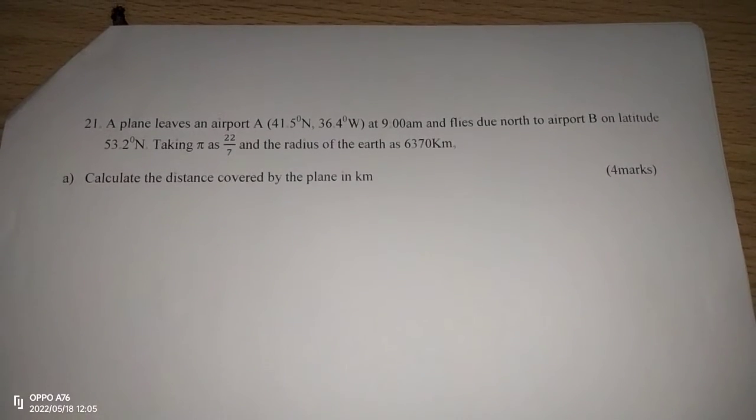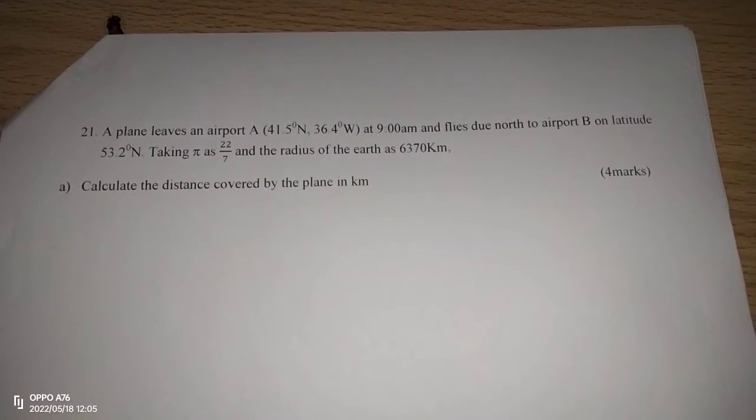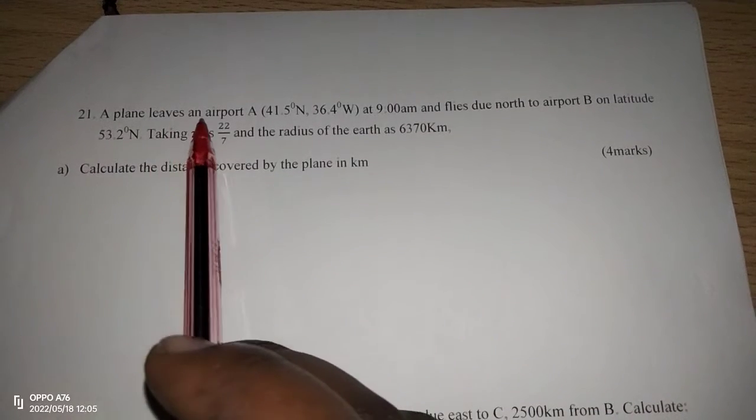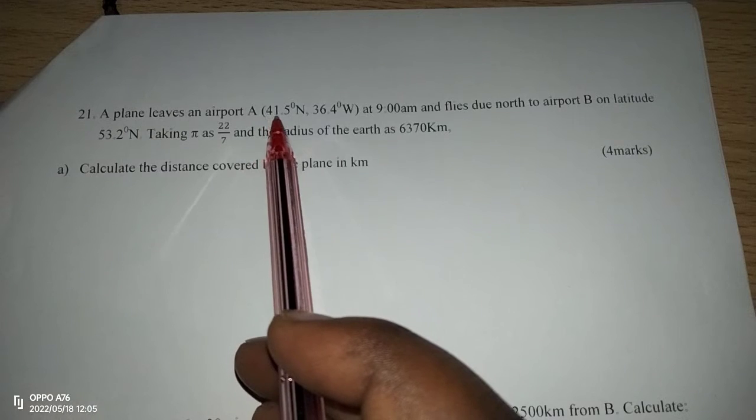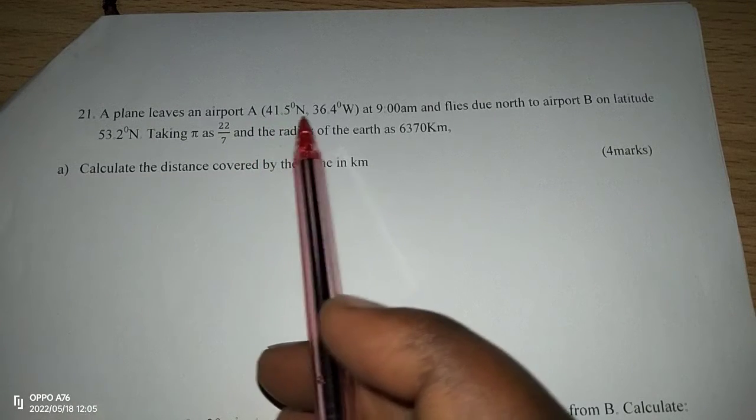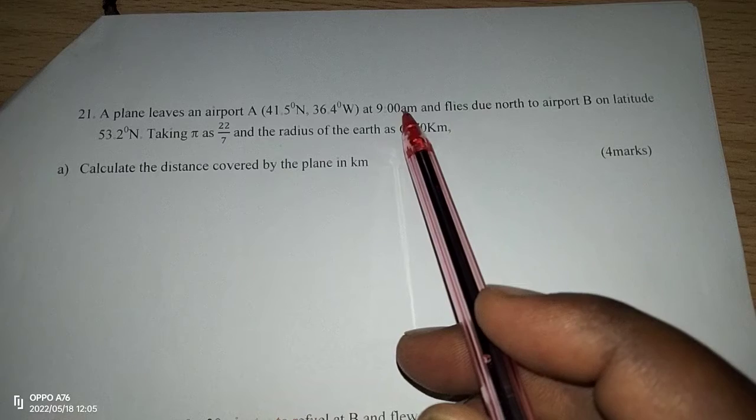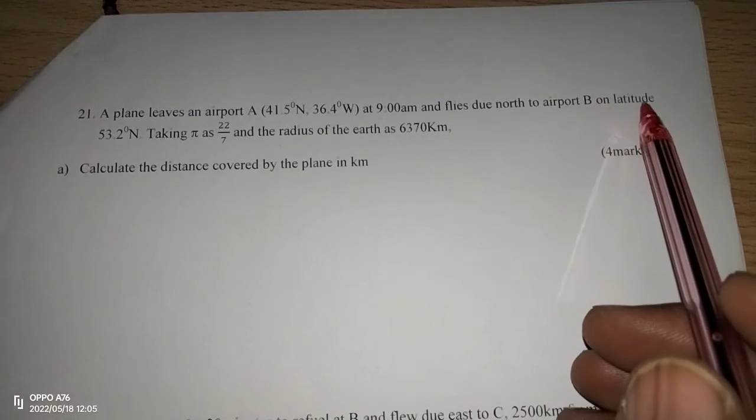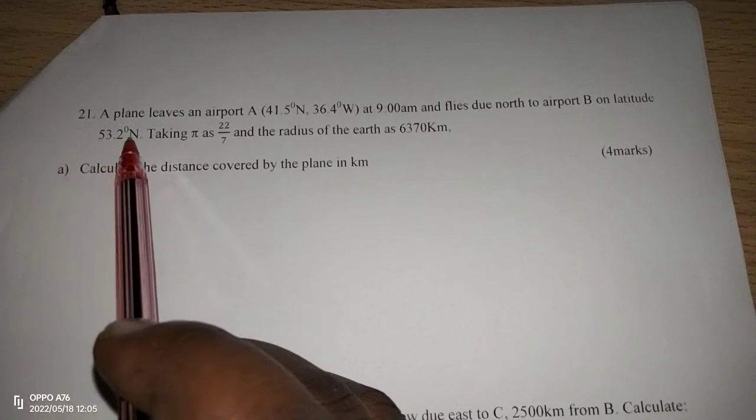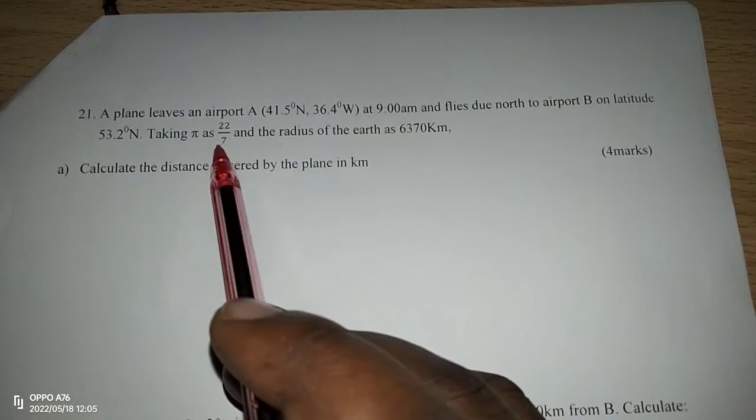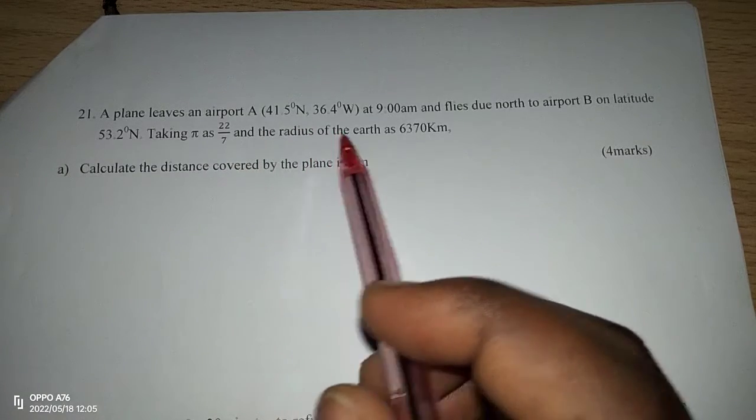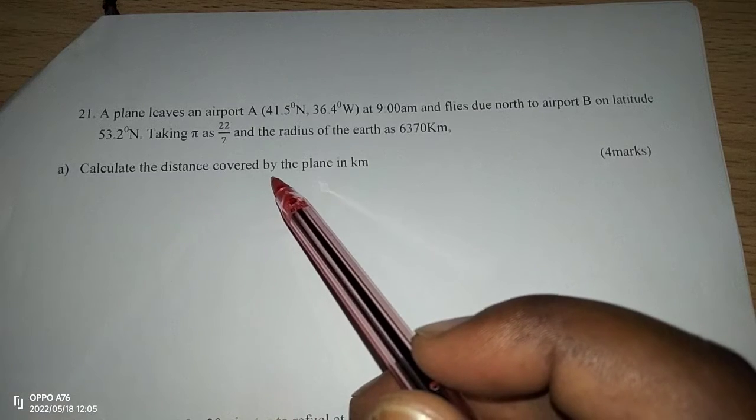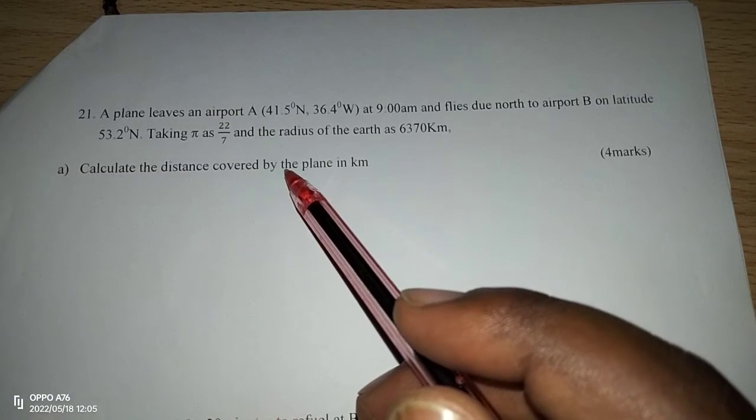Thank you for joining this lesson. We are going to look at longitudes and latitudes, whereby a question tells us that a plane leaves an airport A at 41.5 degrees north, 36.4 degrees west at 9am and flies due north to airport B on latitude 53.2 north, taking pi as 22 out of 7 and radius of the earth as 6370. Part A: calculate the distance covered by the plane in kilometers.